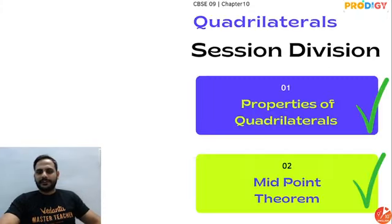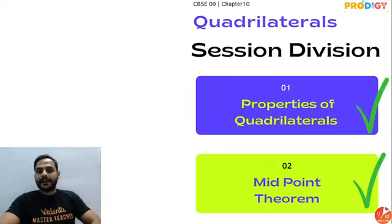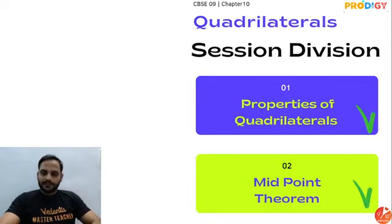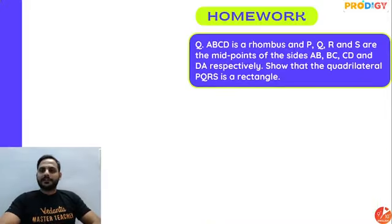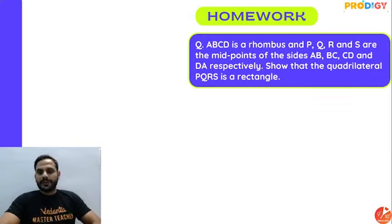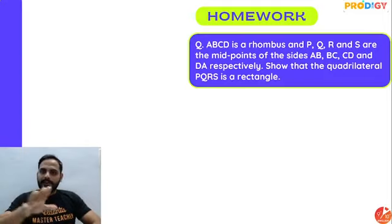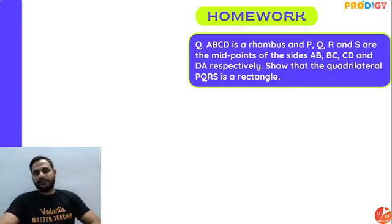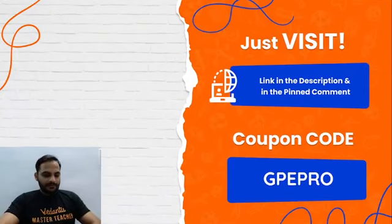One key takeaway: focus a lot on diagrams when solving geometry questions — diagrams give you ideas. We have now completed both sessions on the topic of Quadrilaterals. Your homework question is to show that a given quadrilateral is a rectangle; think about how to prove any quadrilateral to be a rectangle and I will give the solution in the next class.